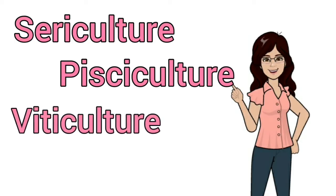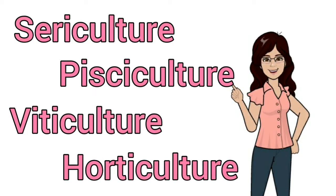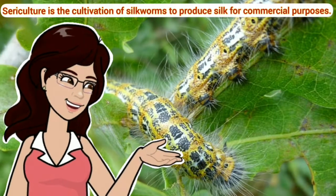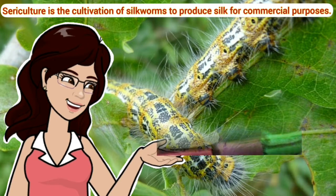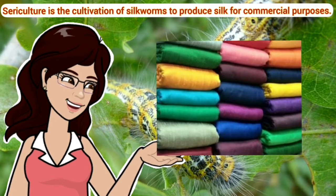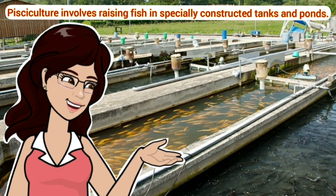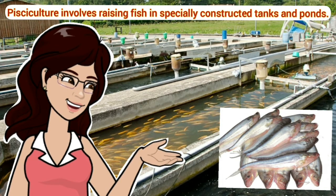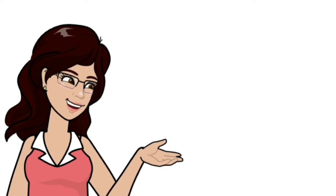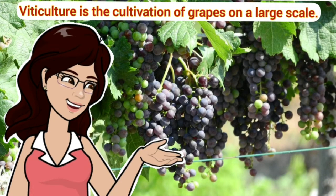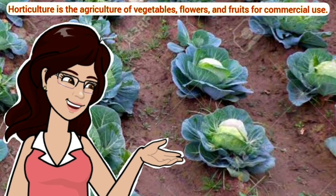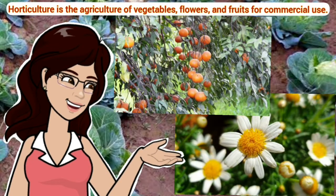Similar to agriculture, we have sericulture, pisciculture, viticulture, and horticulture, but these terms have different meanings. Sericulture, or silk farming, is the cultivation of silkworms for commercial purposes. Pisciculture, or fish farming, involves raising fish in specially constructed tanks and ponds. Viticulture is the cultivation of grapes on a large scale, and horticulture is the agriculture of vegetables, flowers, and fruits for commercial use.